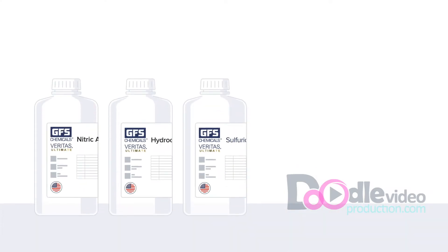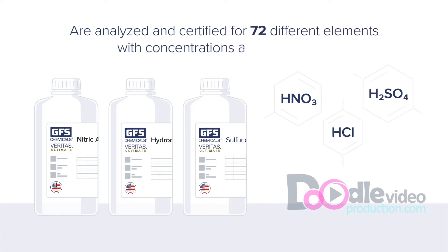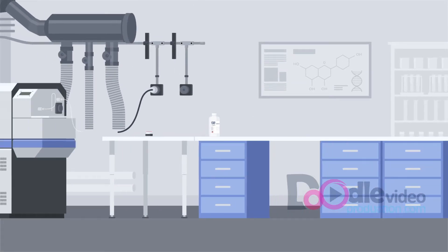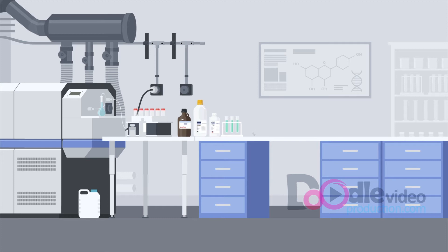GFS Chemicals Veritas Trace and Veritas Ultimate acids are analyzed and certified for 72 elements with concentrations at the ppt level, some of the cleanest acids in the world.